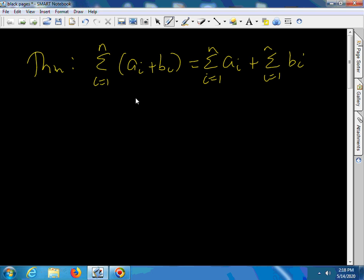We are going to prove the sum rule for sigma notation. The summation as i goes from 1 to n of a_i plus b_i, this is simply the sum as i goes from 1 to n of a_i plus the sum as i goes from 1 to n of b_i.